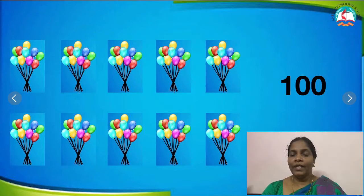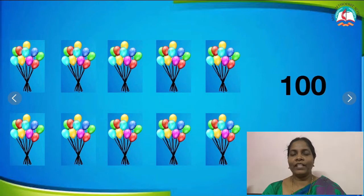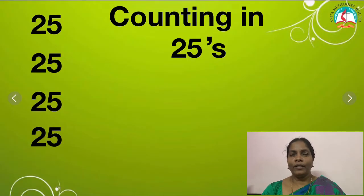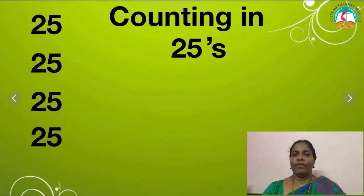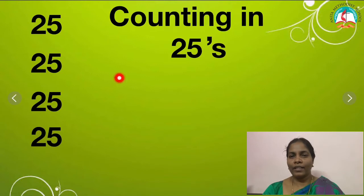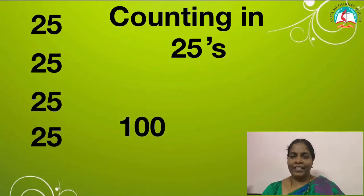Very good children. Now look at the next one — counting in 25s. How many 25s are there? 1, 2, 3, 4. When we count all the 25s together, we will get 100.